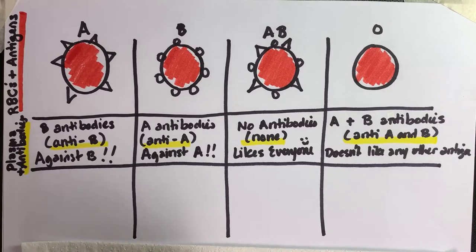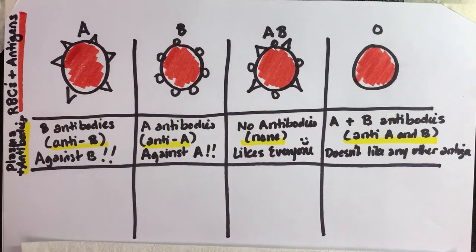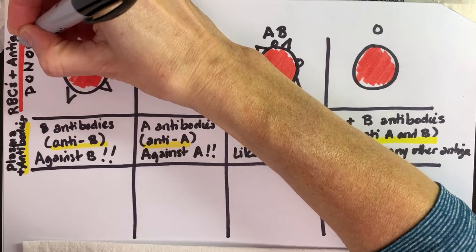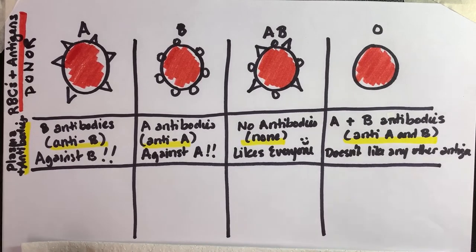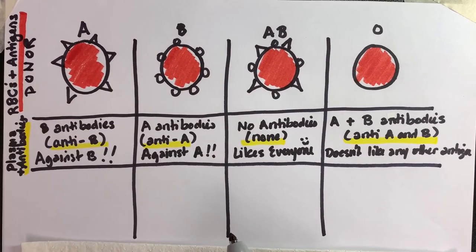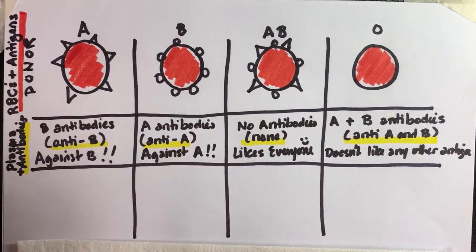One thing to be very cognizant of is this top row with just the red blood cells — this is the donor row. When you give blood to someone, unless you're giving whole blood (the entire unfractionated, non-centrifuged version), when the blood is fractionated you only give the heavy things that settle at the bottom — you only give the red blood cells to someone.